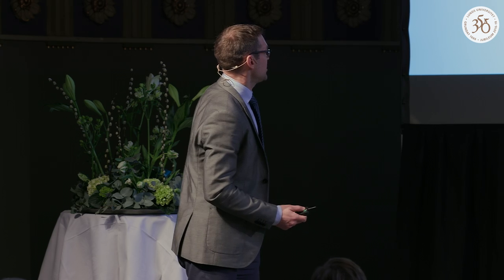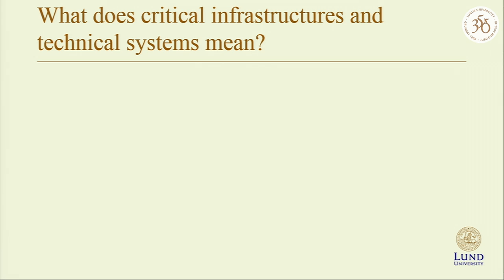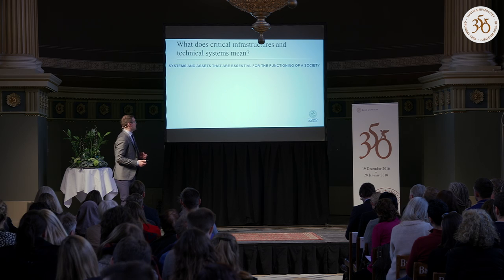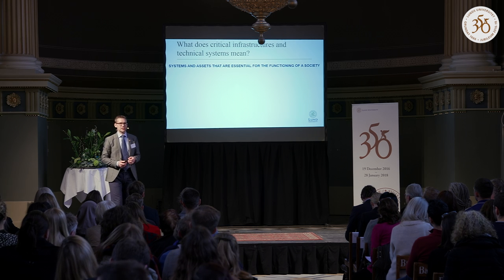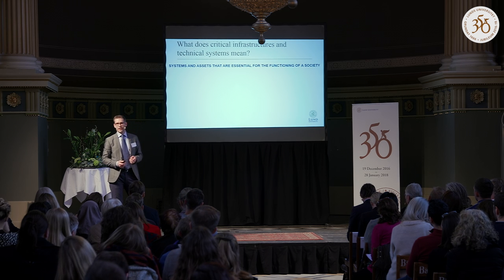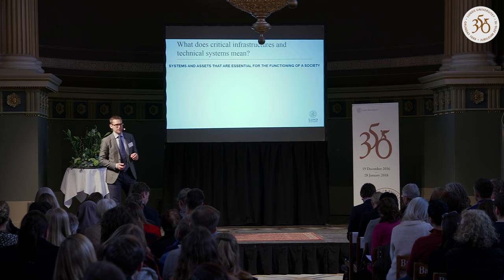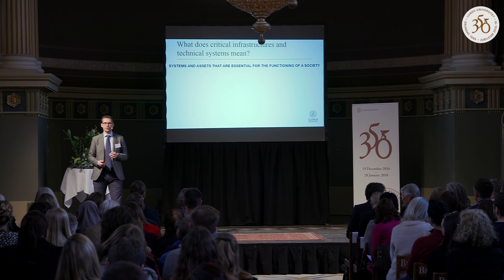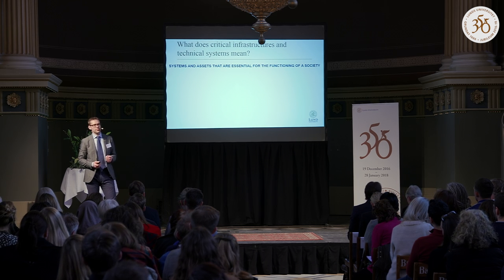The first question I should start with: what does that mean? What does critical infrastructure and technical system mean in the context of risk and disasters? Well, we all have an intuitive feeling of what a technical system is. But what is a critical infrastructure, really? A rough definition is: systems and assets that are essential for the functioning of a society. That might not clarify things a lot, so I'm going to use a simple example to illustrate it a little bit more clearly.